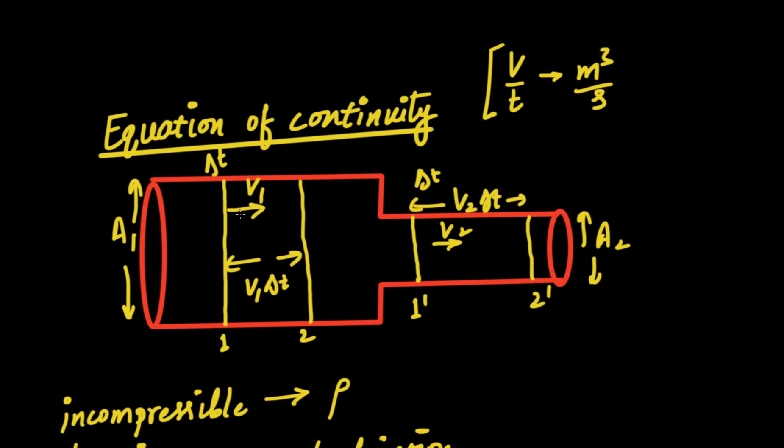Now if we try to imagine how much amount of liquid is contained in this section of the pipe, volume of this section is a1 v1 delta t. And volume of this section is a2 delta t into v2.